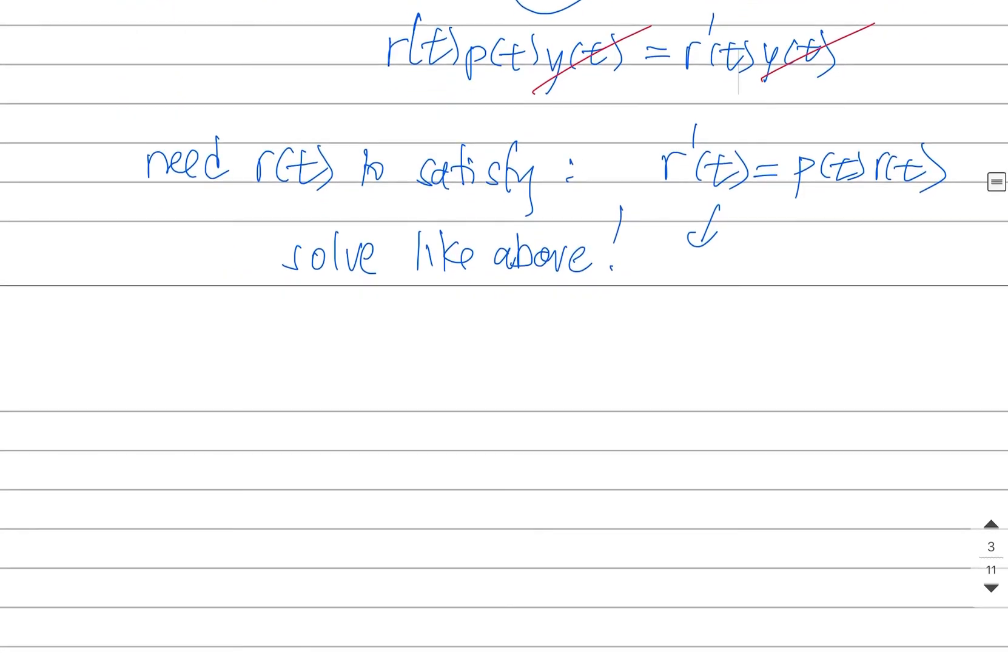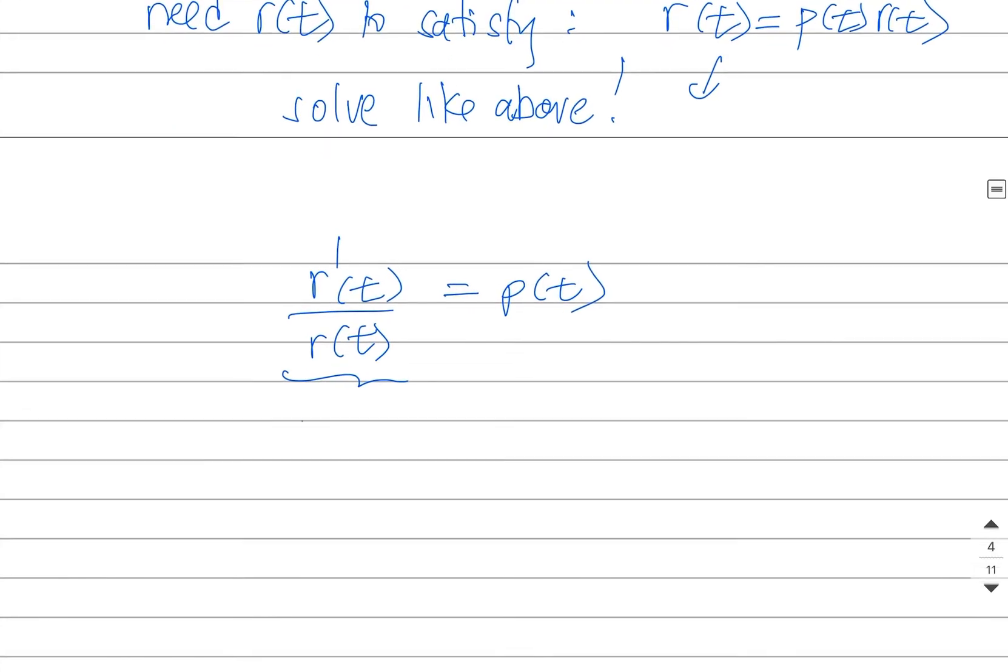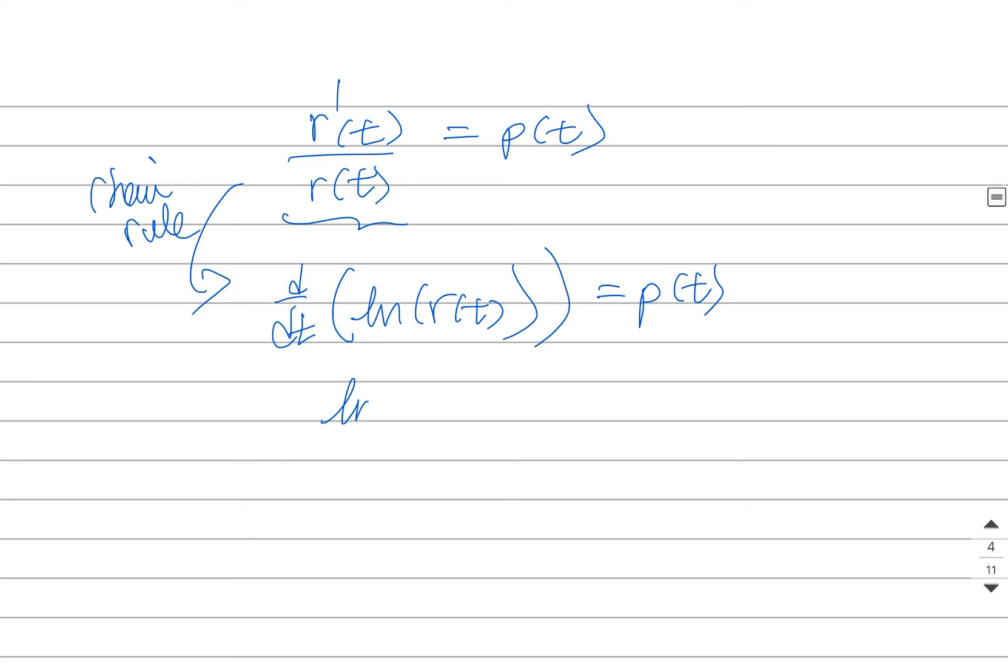It's going to be a little bit different here because there's not a constant on this side. On this side, there's a function. From the chain rule, I can realize that this is just the derivative of the natural log. And that's equal to P(t), but same idea. I'm going to anti-differentiate both sides.